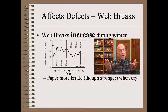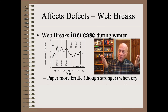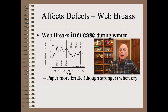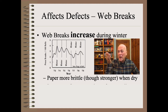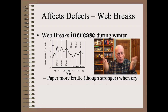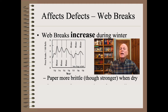One of the landmarks of web break studies was from Seth and Page in the early 1980s. What they found, quite unexpectedly, is that paper web breaks increased noticeably in the winter months. Intuitively, this at first doesn't make much sense because paper is drier in the winter and, as we saw in the last slide, is stronger. So why does this supposedly stronger paper break more? That is because strength is a test lab property. Much more important is toughness, which is the real-world strength. Paper is more brittle and, consequently, less tough when it is dry.